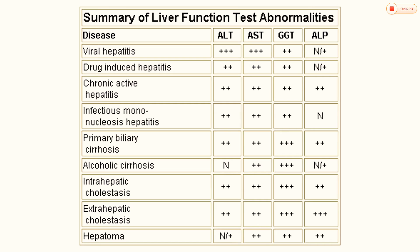Along with it, the gamma glutamyl transpeptidase levels were also seen to be higher in diseases such as cirrhosis, where the liver undergoes problems and part of the liver becomes dysfunctional.